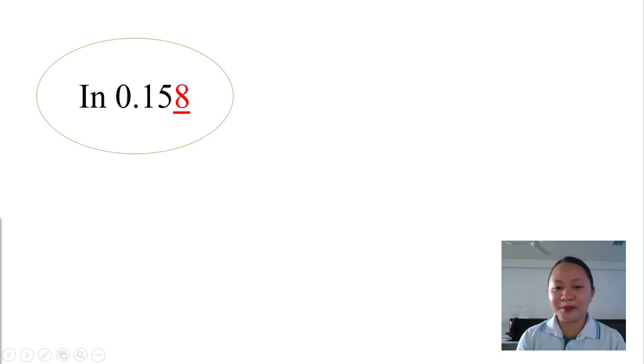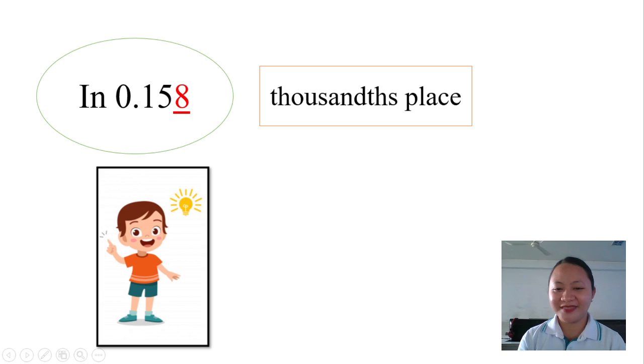In 0.158, the digit eight is in what place? Great. It's in the thousandths place. Quite easy, right?